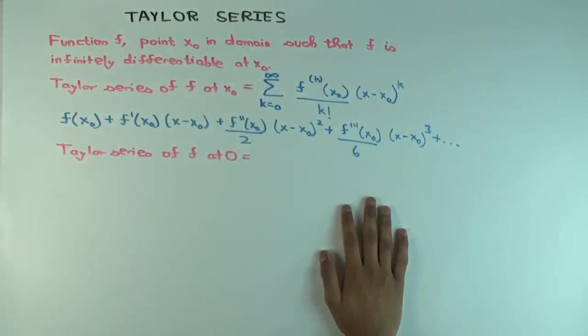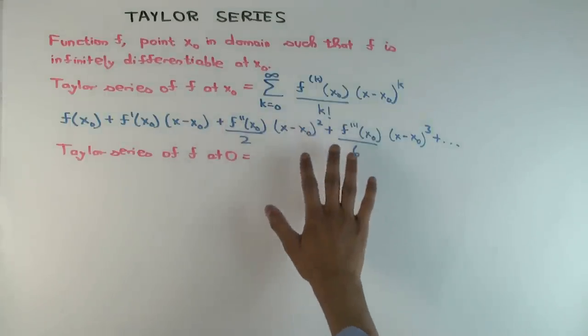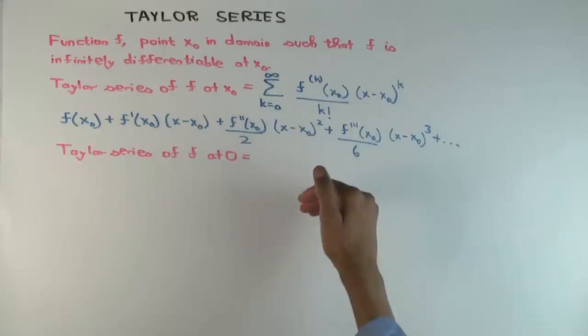Now x0 will be an actual number when we actually have to calculate a Taylor series. So it could be 0, 5, 10, minus 3, or whatever, and f will be a function which is known to us. And f being infinitely differentiable at x0 means in particular that f is defined in a neighborhood of x0, right, because only then can you take derivatives. And each of its derivatives is defined around x0.